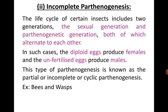In incomplete or cyclic Parthenogenesis, insects show two generations: the sexual generation and the Parthenogenesis generation, which alternate with each other. In such cases, the diploid eggs produce females and the unfertilized eggs produce males. This type is known as partial, incomplete, or cyclic Parthenogenesis, and is commonly seen in bees and wasps.